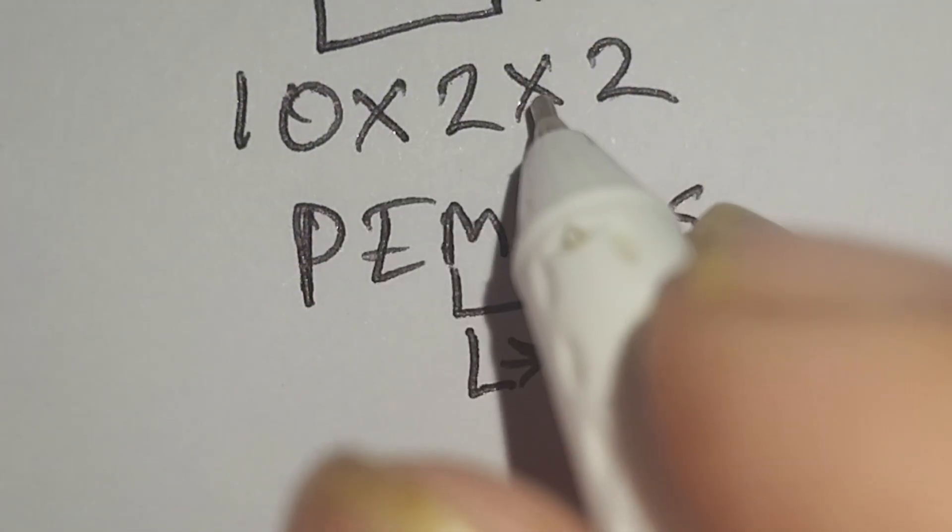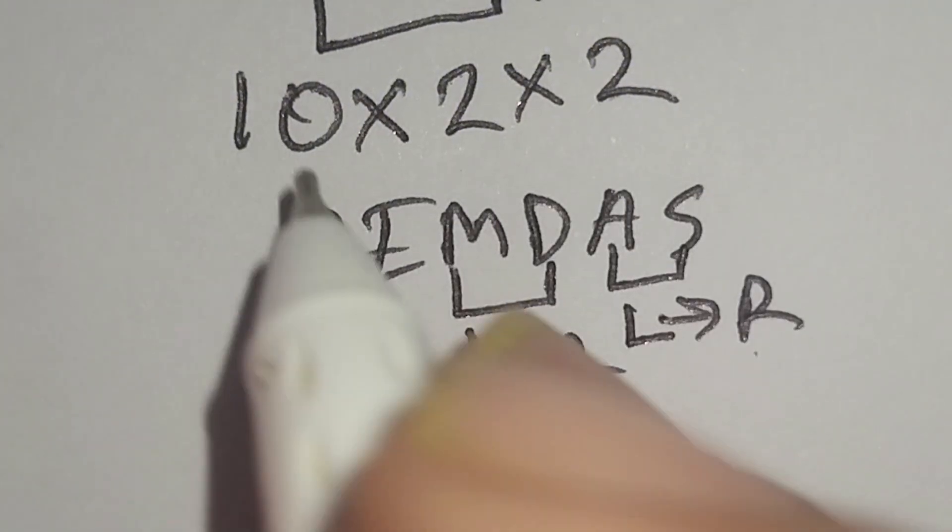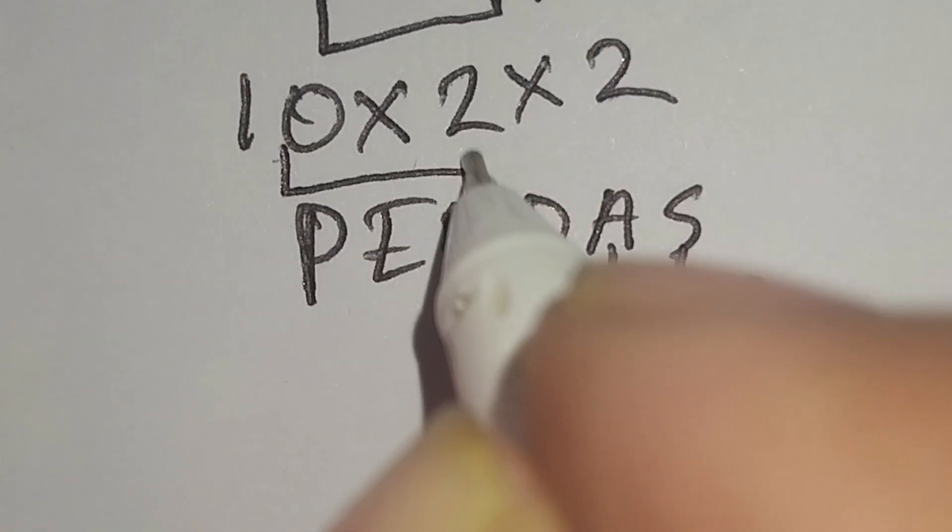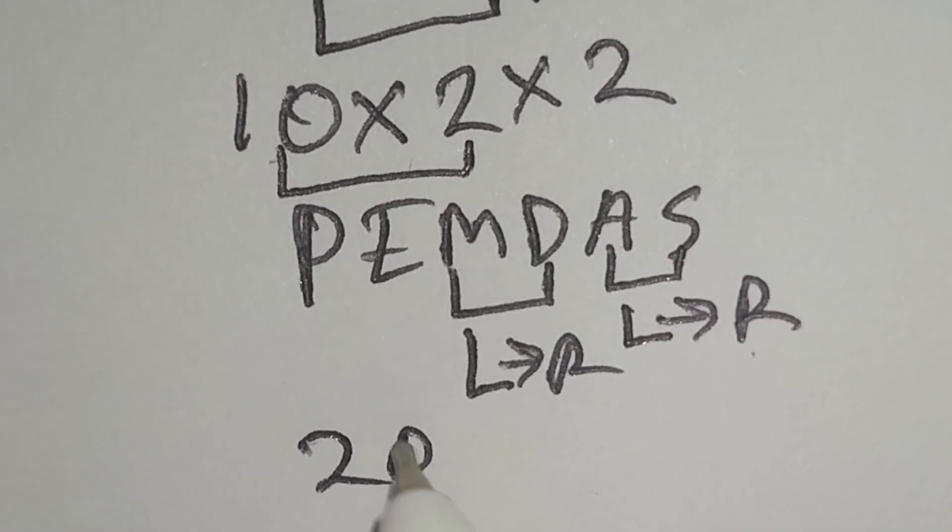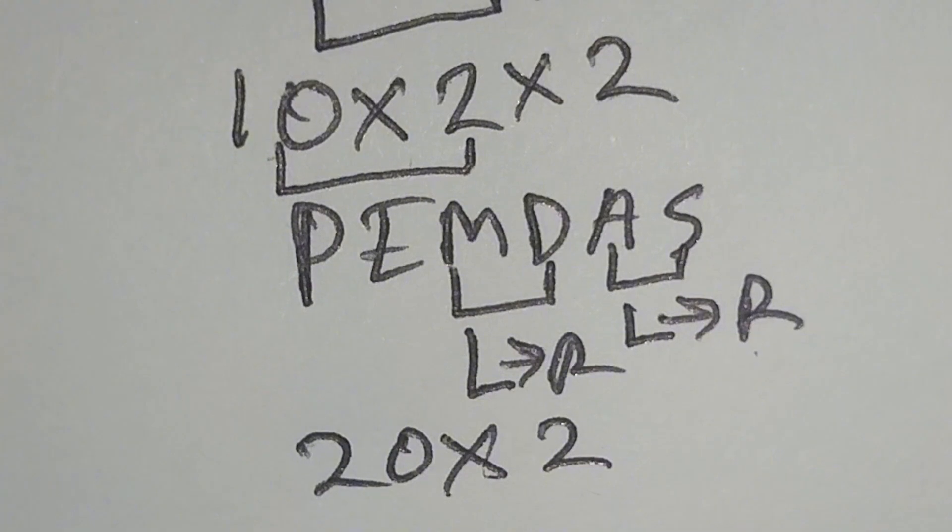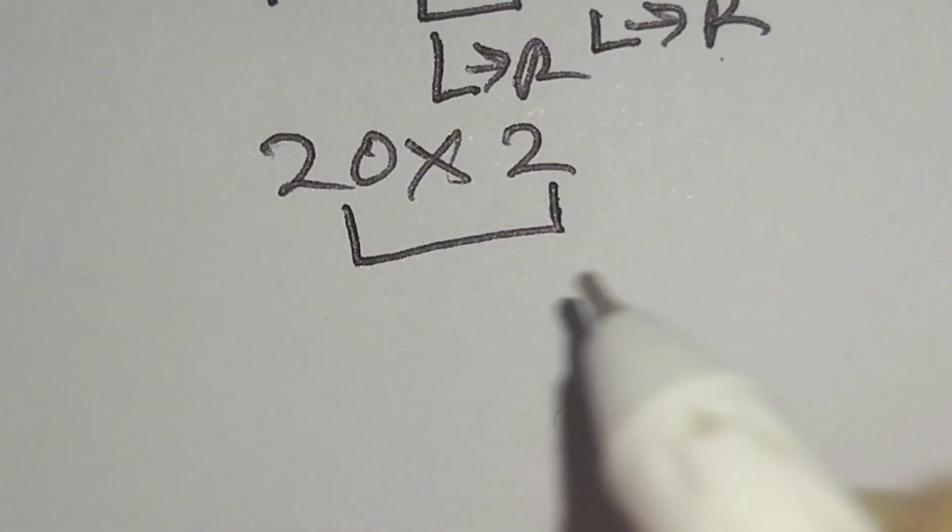Here, 10 multiplied by 2 gives us 20, multiply this 2. Here, 20 multiply 2 gives us 40.